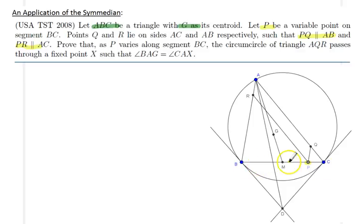We would like to prove that as P moves between B and C, the circumcircle of triangle AQR passes through a fixed point X, which has this property: angle BAG equals angle CAX. So X must be somewhere on the symmedian, and I did go ahead and draw the symmedian, so X is somewhere on the symmedian.